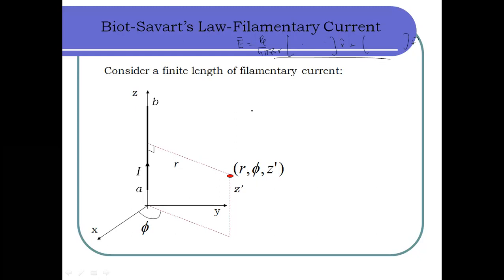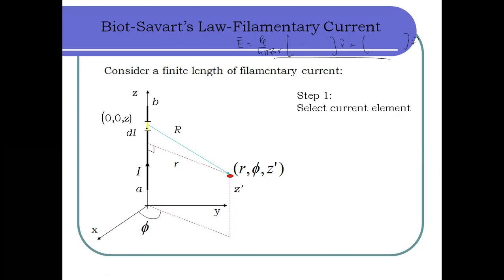There are three steps similar to those used for Coulomb's law. Step 1 is to select the current element. The element is located at point (0, 0, Z), and the element of current is I DL vector. Since the current is flowing upward, the vector is written as IDZ ẑ, because DL equals DZ in the direction of Z.